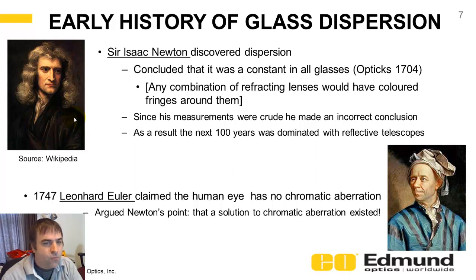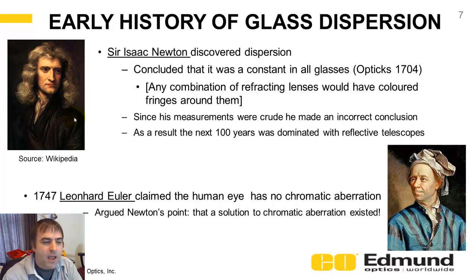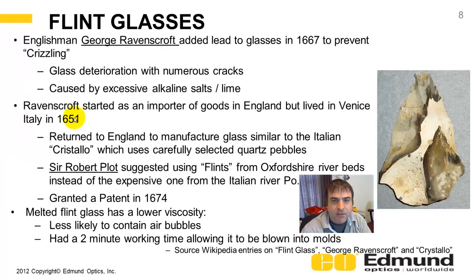As a result, reflective telescopes dominated astronomy and other viewing for a hundred years. In 1747, Euler claimed the human eye has no chromatic aberration — we don't see that in our eye — and therefore a solution exists to correct for color. The eye probably does have a little bit of chromatic aberration, but the brain filters it out.